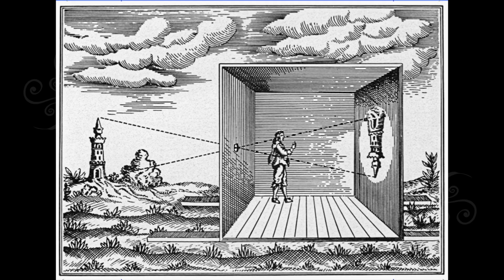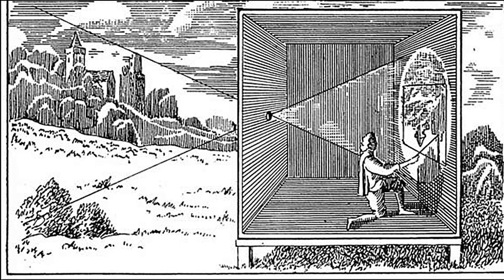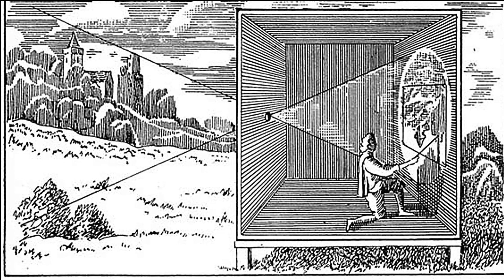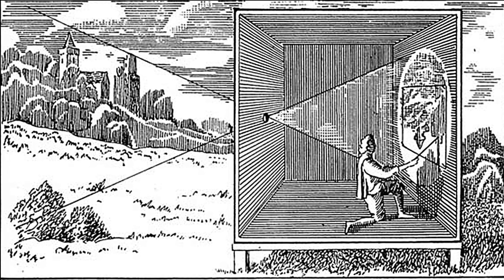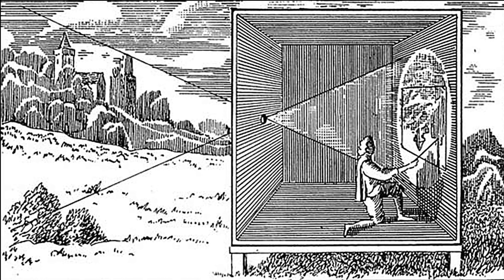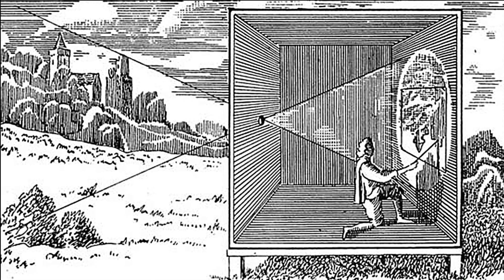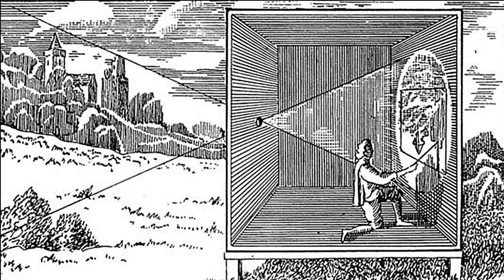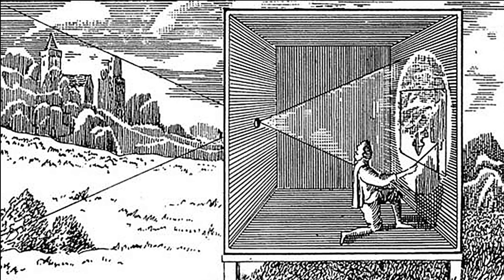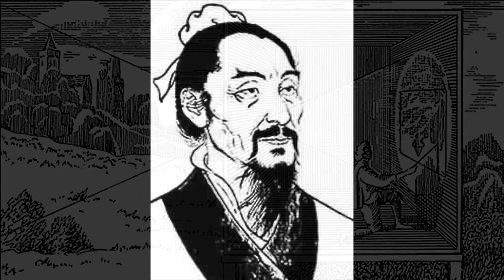The Camera Obscura is the device that started all the history of photography. In Latin, Camera Obscura means dark chamber. The term comes from the original device in which a completely black room had a small hole put through a wall that showed the image that was reflected through the hole, just flipped.